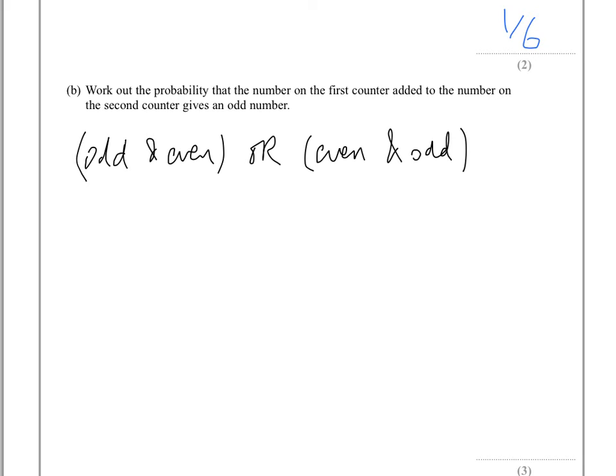So, the probability of getting an odd and then an even, the probability of getting an odd first is 5 out of 9. And remember we don't replace it, so then the probability of getting an even, we've still got 4 evens there, but there's one less overall. And again, because it says or, we add the probabilities.